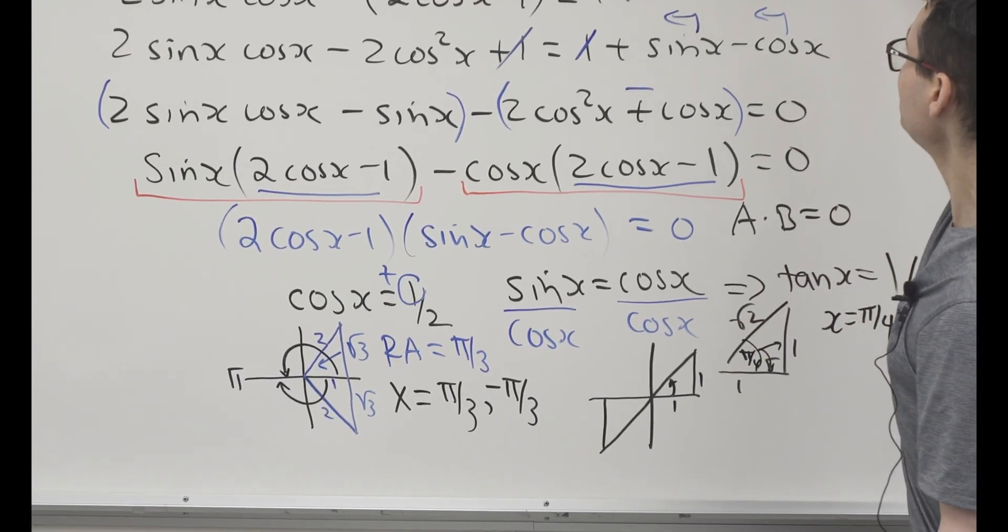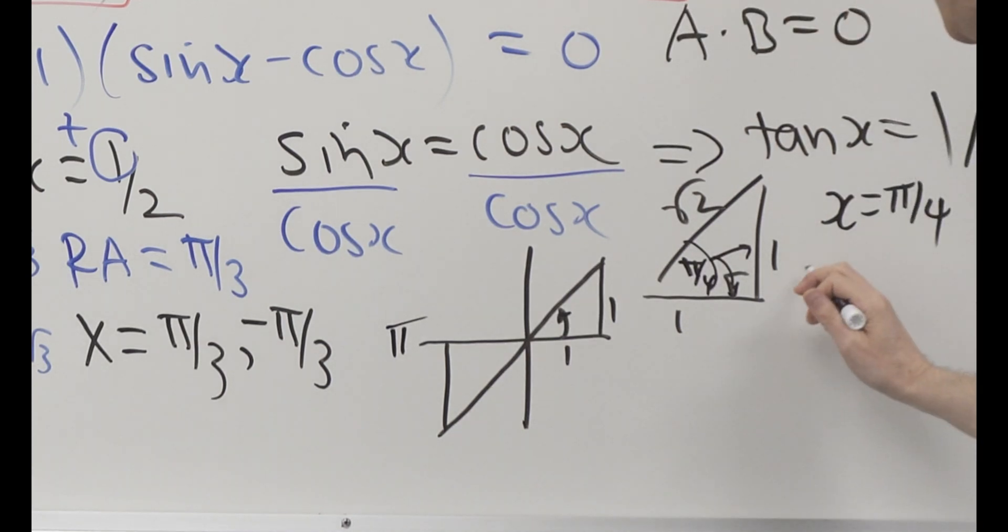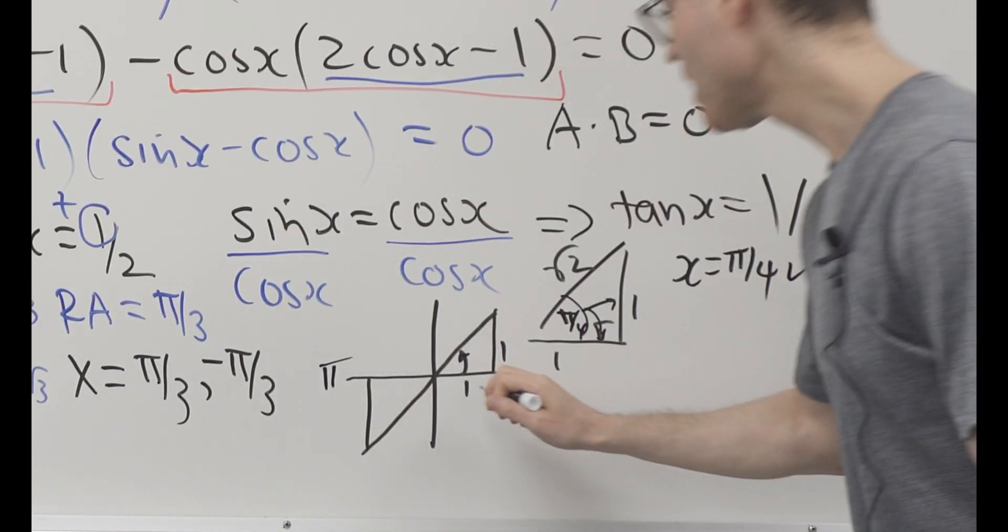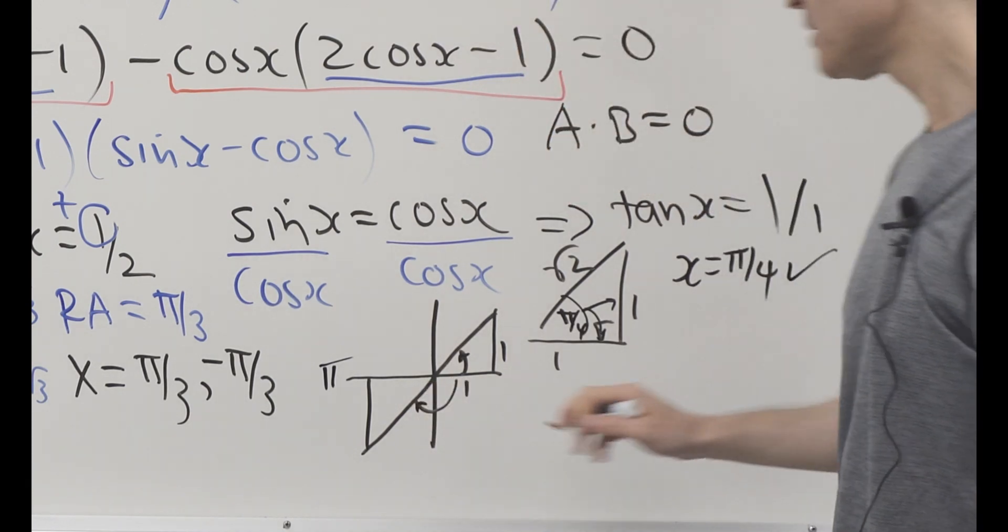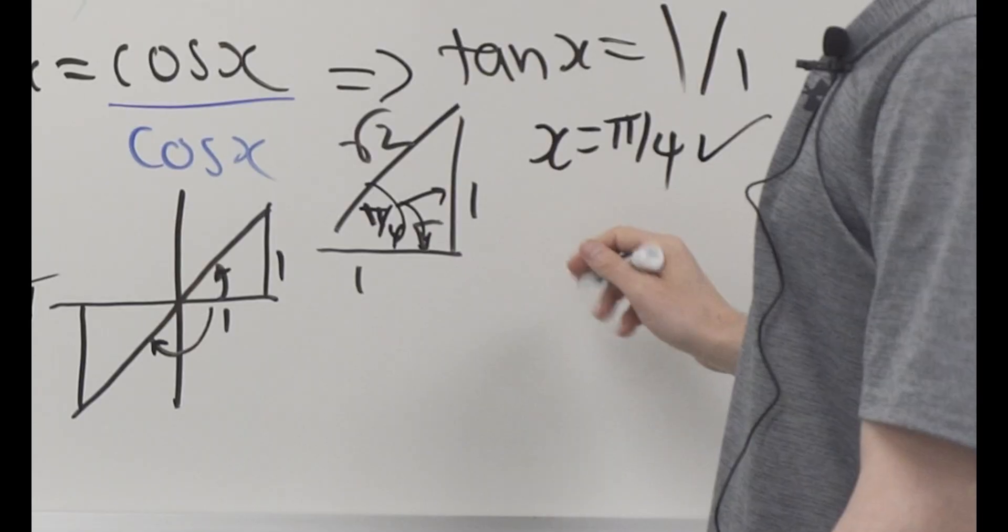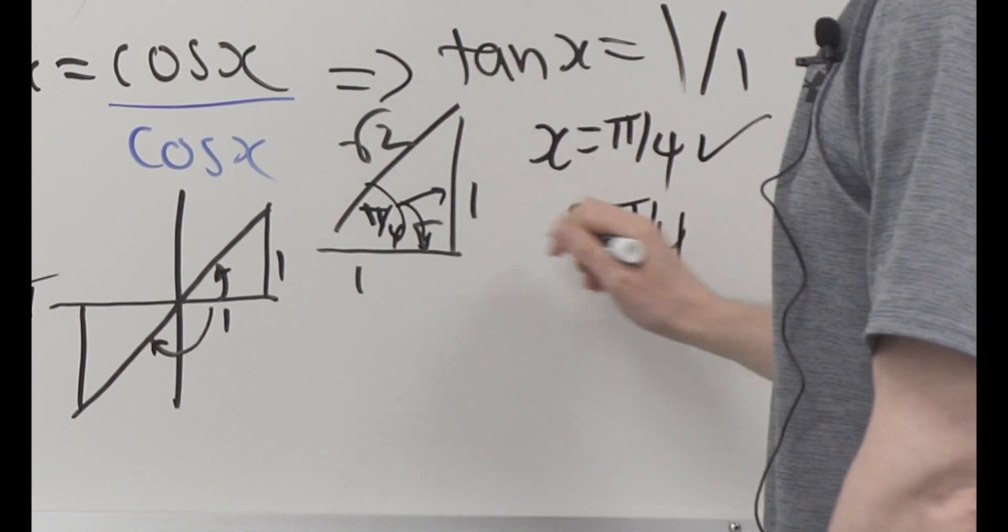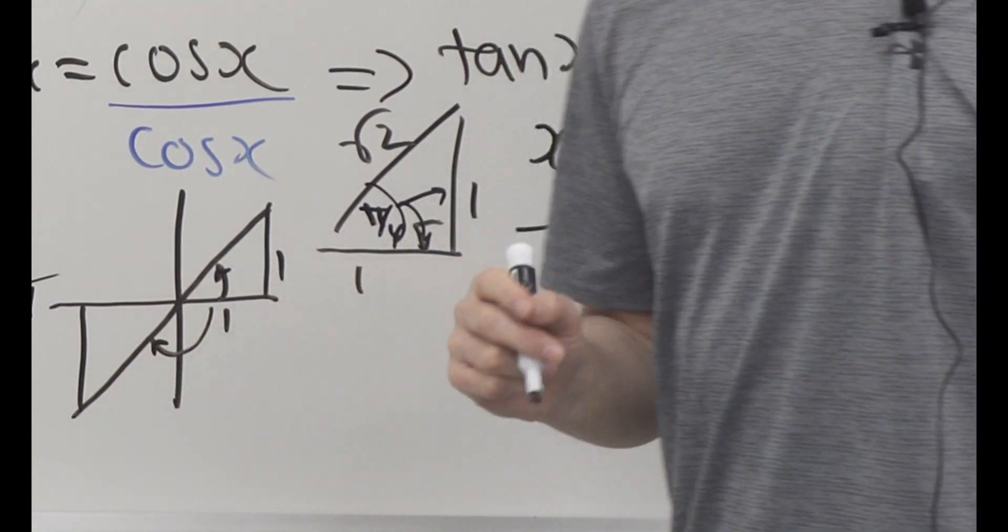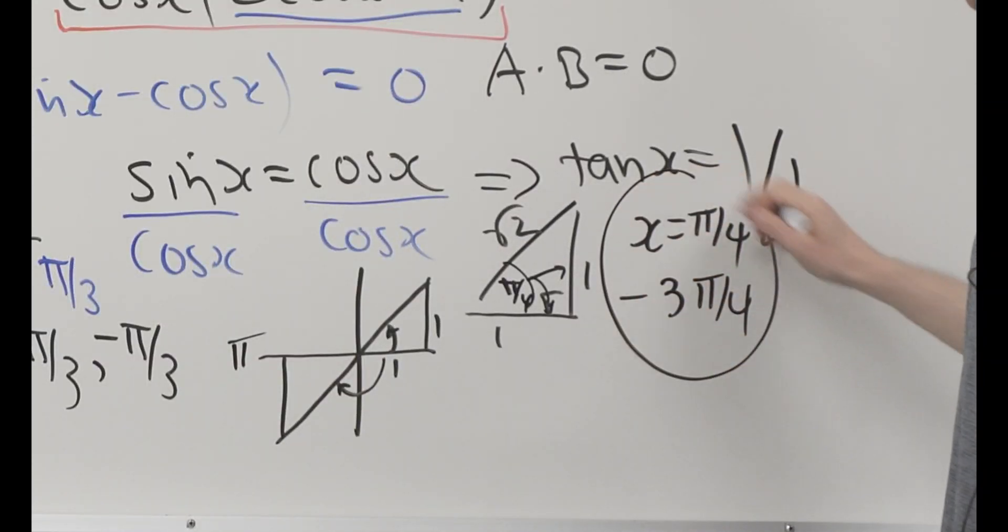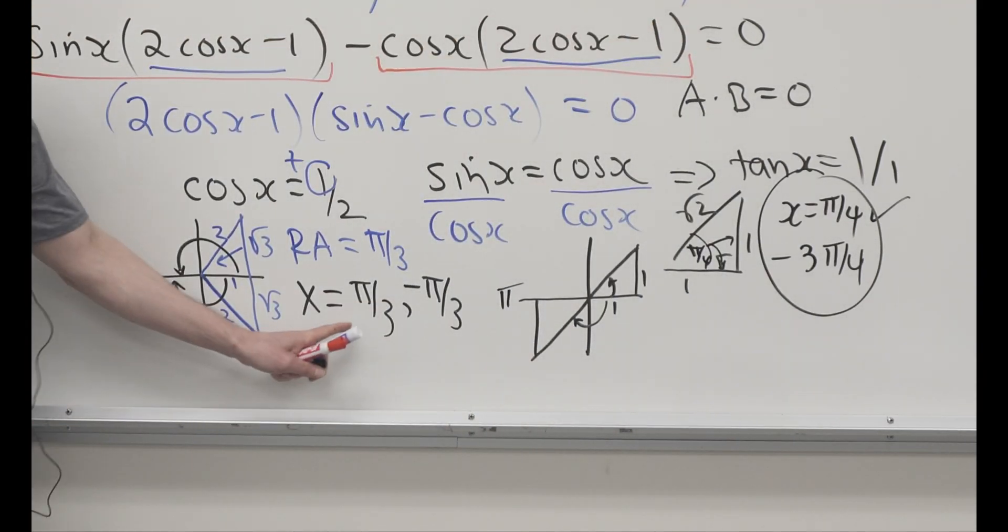Now I want to head counterclockwise all the way to pi, so I get my answer. That's one of the answers. And now I'm going to come back, so I want this answer there. So that's going to be pi minus pi over 4, or 3 pi over 4, but I've got to put a minus in front of it because I'm going in the clockwise direction. So I get four answers: pi over 4, negative 3 pi over 4, these are in radians, pi over 3, and negative pi over 3.